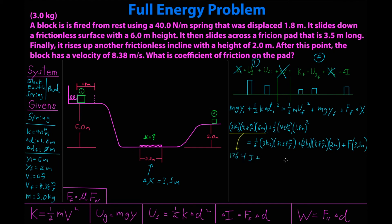I will now find all these: 176.4 joules plus 64.8 joules equals 105.3 joules plus 58.8 joules plus force friction times 3.5 meters. Let's reduce this. 241.2 joules equals 164.1 joules plus force friction times 3.5 meters. Reduce that. 77.1 joules equals force friction times 3.5 meters. So, do the last division and force friction equals 22.0 newtons.